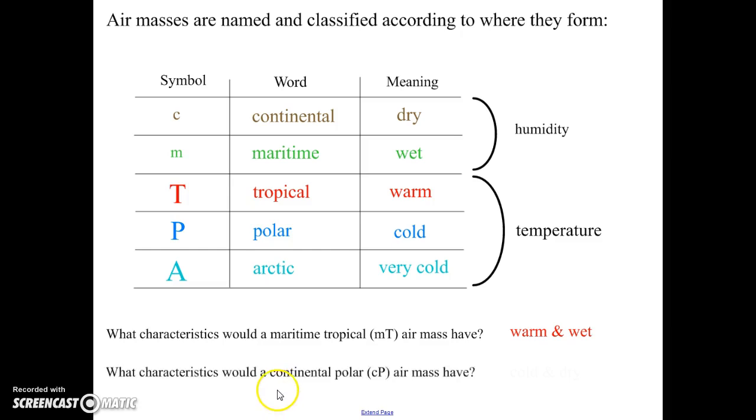What if an air mass was a continental polar air mass? Lowercase c for continental, capital P for polar. Well, continental means dry, polar means cold. So this is going to be some cold and dry air.